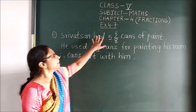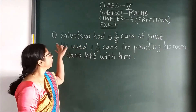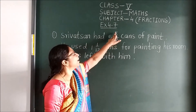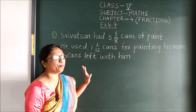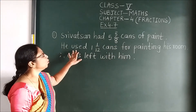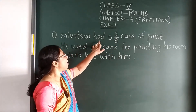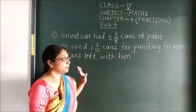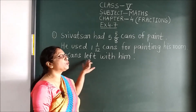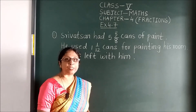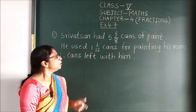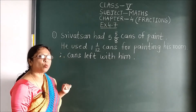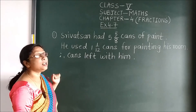In exercise 4.7, we will see the first word problem. Shri Vatsan had 5 and 5/8 cans of paint. He used 1 and 1/12 cans for painting his room. We need to find the cans left with him after completing the painting. The word 'left' tells us we are going to subtract.